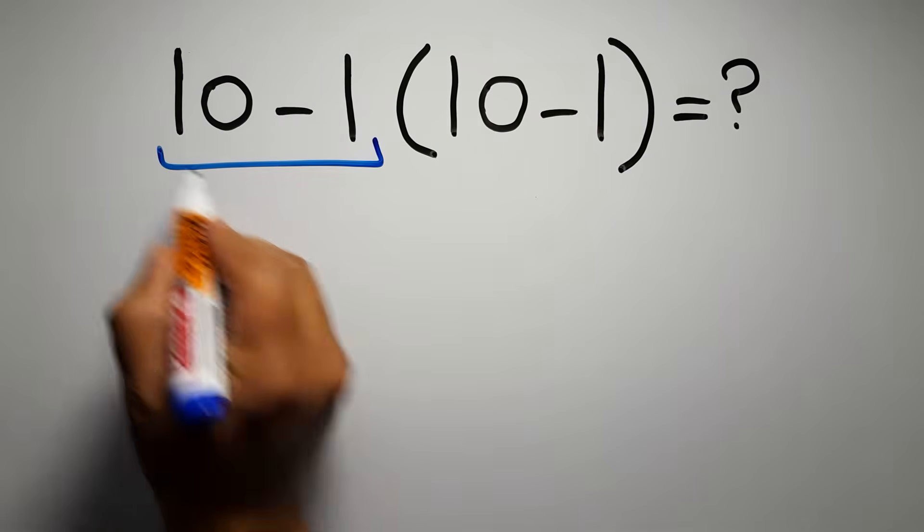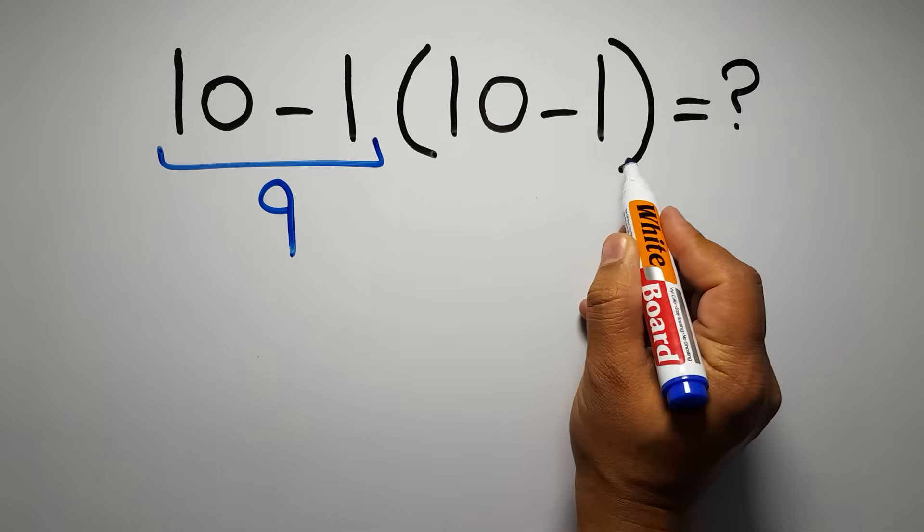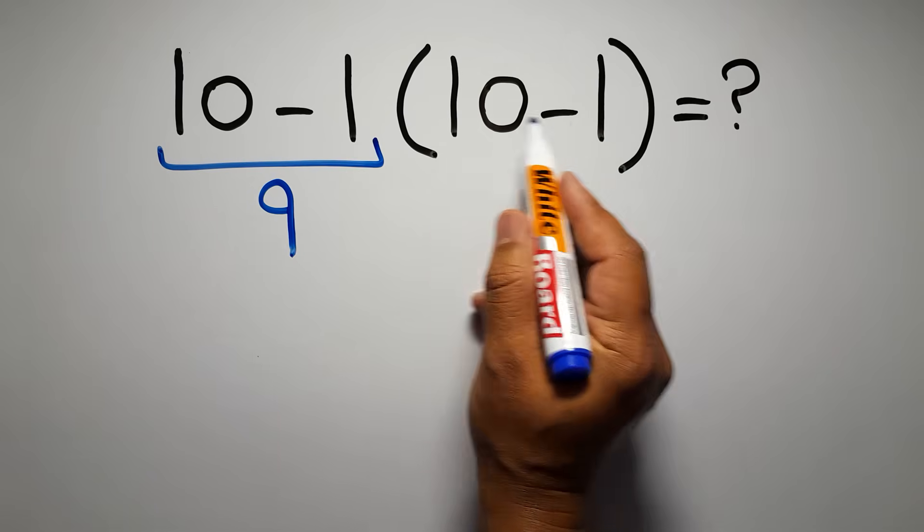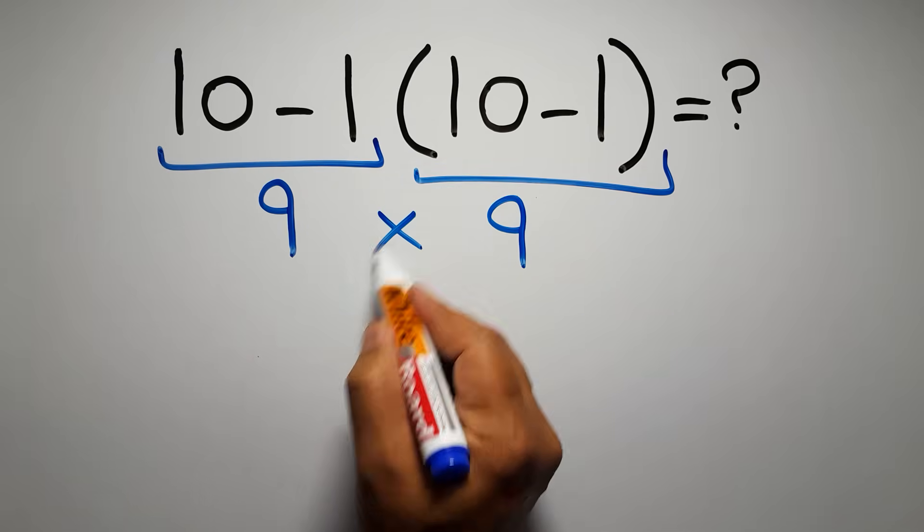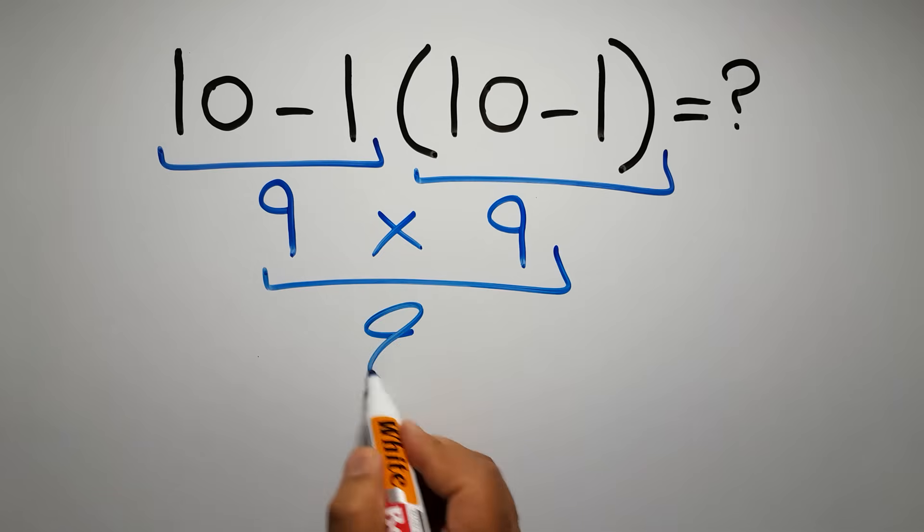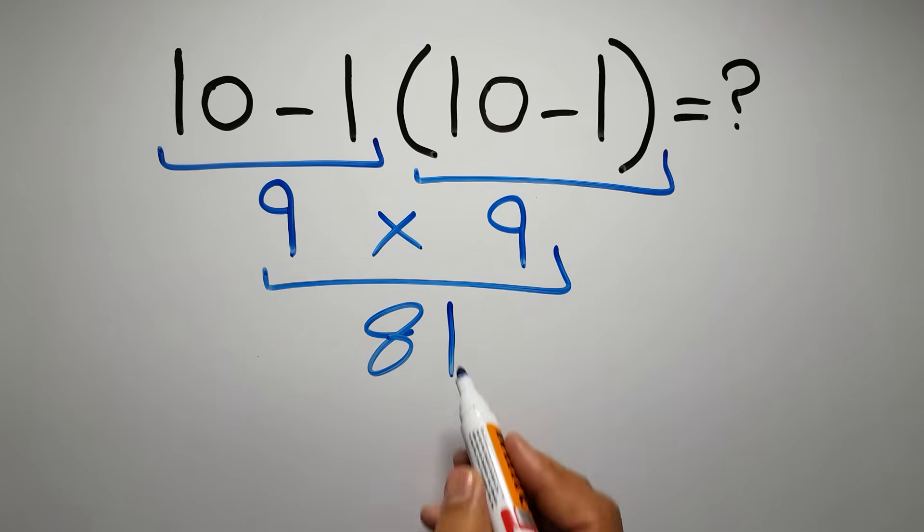10 minus 1 equals 9, and again, here inside these parentheses, we have 10 minus 1, so 9 times 9, which equals 81. But this answer is not correct.